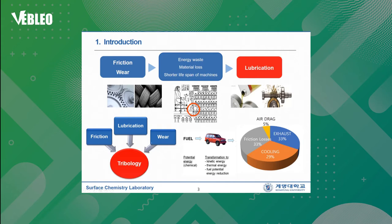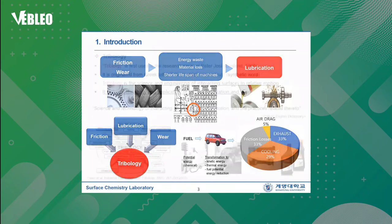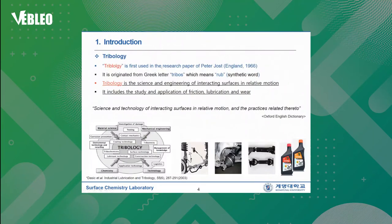So the three keywords — friction, wear, and lubrication — are the three elements in tribology. Tribology was first used in the research paper of Peter Jost in 1966. It is originated from the Greek word 'tribos,' which means rub, and 'logi,' which means study. Tribology is the science and engineering of interacting surfaces in relative motion. It includes the study and application of friction, lubrication, and wear. Tribology is an interdisciplinary study among chemistry, physics, materials engineering, and mechanical engineering.